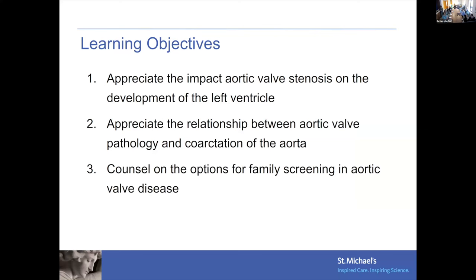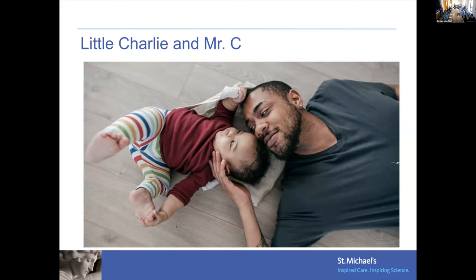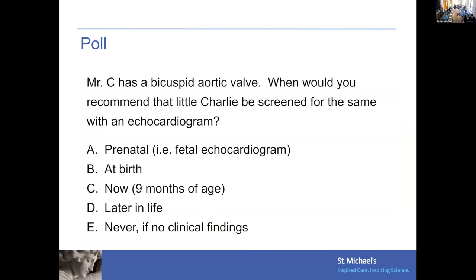Finally, the third learning objective: counsel on the options for family screening in aortic valve disease. Little Charlie — Mr. C is an adult patient with a bicuspid aortic valve, and Charlie has been referred for screening. When would you recommend that Charlie be screened for a bicuspid aortic valve? Option A: prenatal fetal echocardiogram; Option B: at birth; Option C: now at nine months of age; Option D: later in life; Option E: never, if there are no clinical findings.